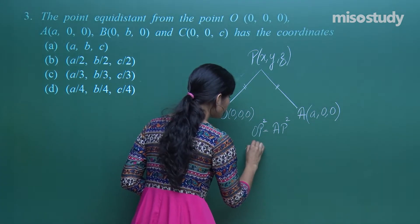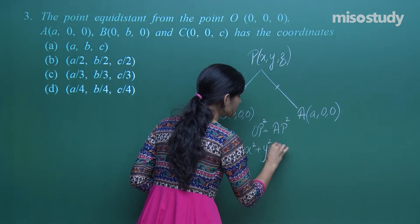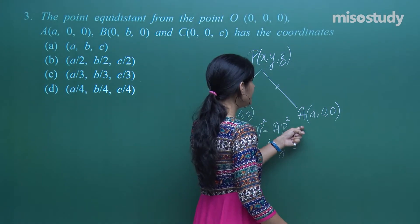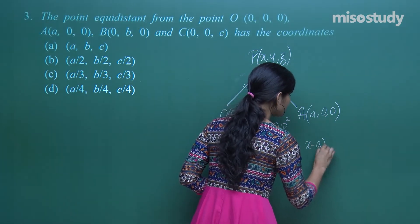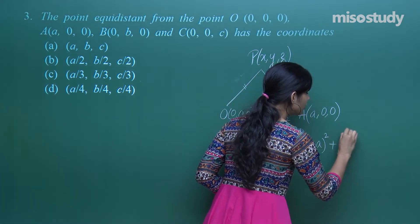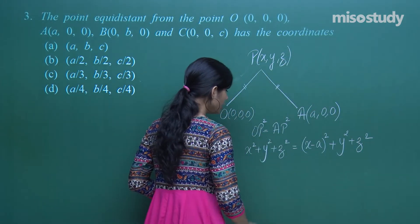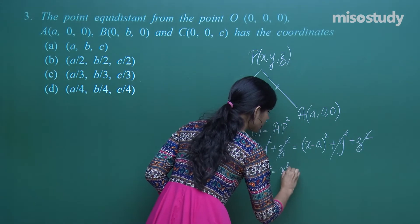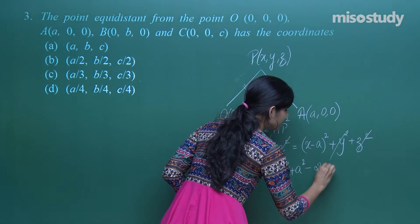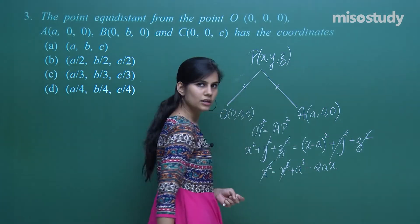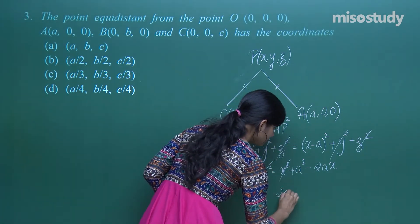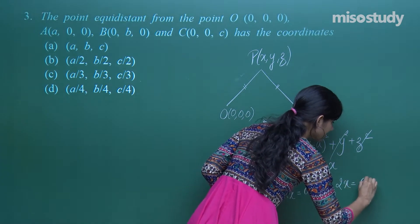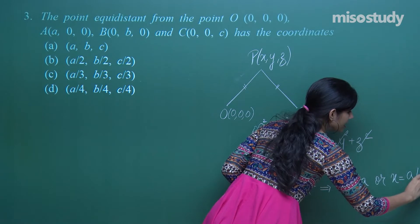OP² = (x−0)² + (y−0)² + (z−0)², and AP² = (x−a)² + (y−0)² + (z−0)². The y² and z² terms cancel, leaving x² = x² + a² − 2ax.